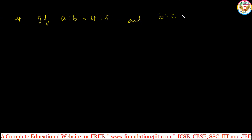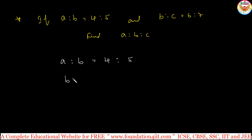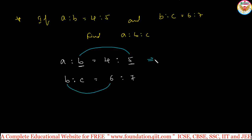Now one problem with ratios. If a is to b equals 4 is to 5, and b is to c equals 6 is to 7, find a is to b is to c. Do not write directly 4, 5, 7 or 4, 6, 7 because the b value is not the same — b is 5 in the first ratio and 6 in the second ratio. We must make the b value the same in both ratios first.